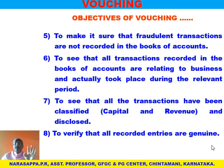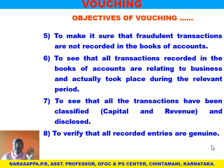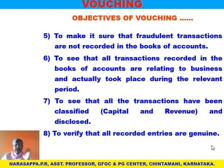Fifth objective: to make sure that fraudulent transactions are not recorded in the books of accounts. Misappropriation — intentionally committing mistakes for personal benefit — certain entries recorded in the books of accounts can be eliminated by vouching. Sixth: to see that all the transactions recorded in the books of accounts relate to the business and actually took place during the relevant period or year. Vouchers and transactions must match with the particular relevant year of auditing — another year's voucher should not be produced for that particular auditing purpose.